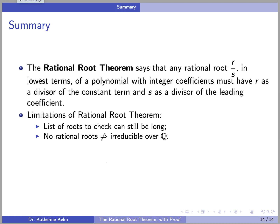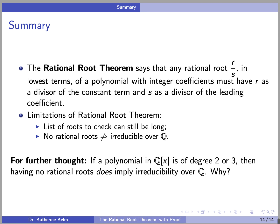In summary, the Rational Root Theorem says that any rational root r/s in lowest terms of a polynomial with integer coefficients must have r as a divisor of the constant term and s as a divisor of the leading coefficient. We saw that the theorem has its limitations: the list of roots to check can still be long and tedious, and not having rational roots does not imply irreducibility over Q. As a question for further thought: if a polynomial with rational coefficients is of degree 2 or 3, then having no rational roots does imply irreducibility over Q — why? I hope you found this video helpful.